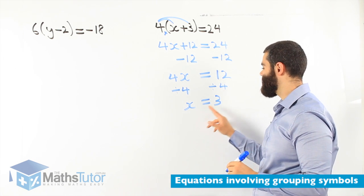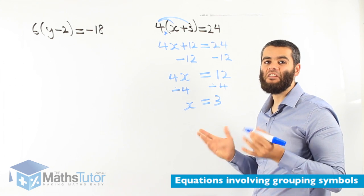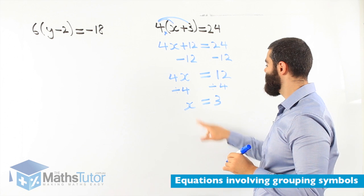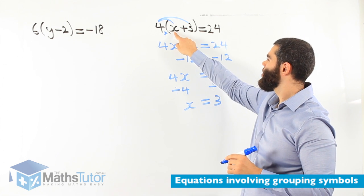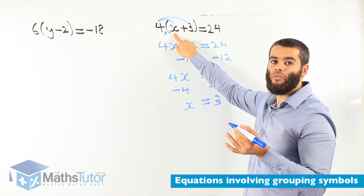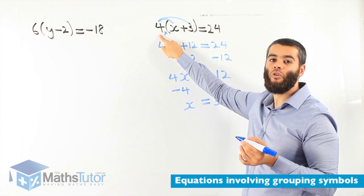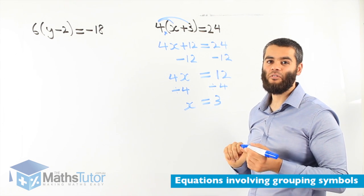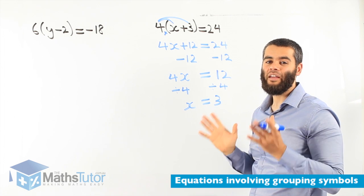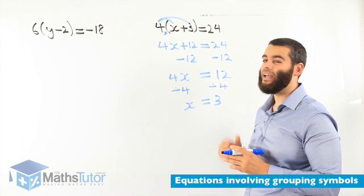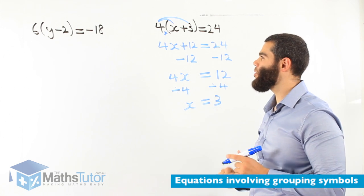Our answer is x equals to 3. We can try to see if it's correct. We substitute. x is 3. We know that is going to be 3. 3 plus 3 is 6. 6 times 4 is 24. So, yes, it works. Easy. We need to expand right at the start.